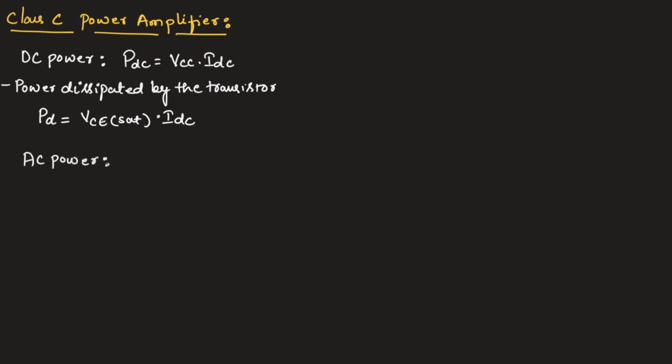Now, let us derive the expression for efficiency. The DC power can be given as PDC = VCC × IDC. The power dissipated by the transistor can be given as PD = VCE(sat) × IDC.